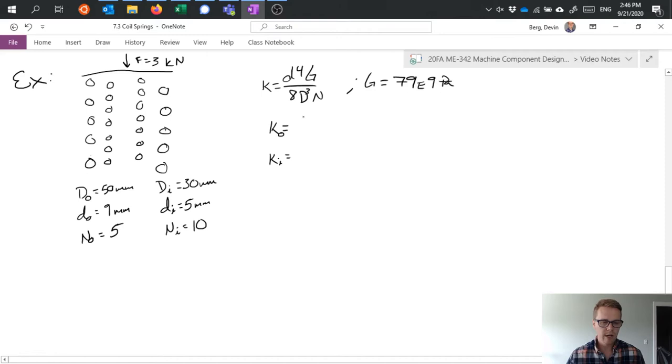Starting with the outer, we have nine millimeters to the fourth times—units, we need to—so I've got this one in millimeters. We can do gigapascals in millimeters if we want to, just recognizing that basically one megapascal is a newton per millimeter squared. So converting that to gigapascals, we'd have 79,000 newtons per millimeter squared, divided by eight times 50 millimeters to the third times five turns. And if we calculate this out, we get 103.66